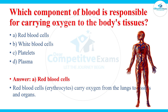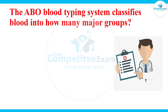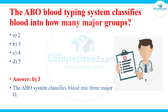Question number three: the ABO blood typing system classifies blood into how many major groups? The answers are two, three, four, and five. The correct answer is three. The ABO system classifies blood into three major groups: A, B, and O.